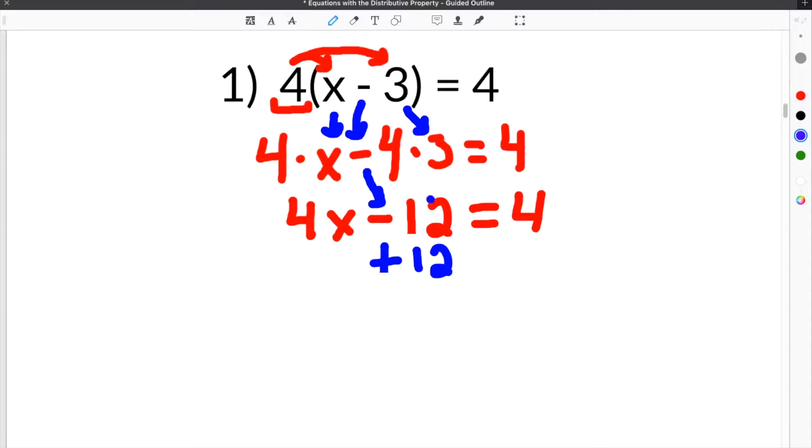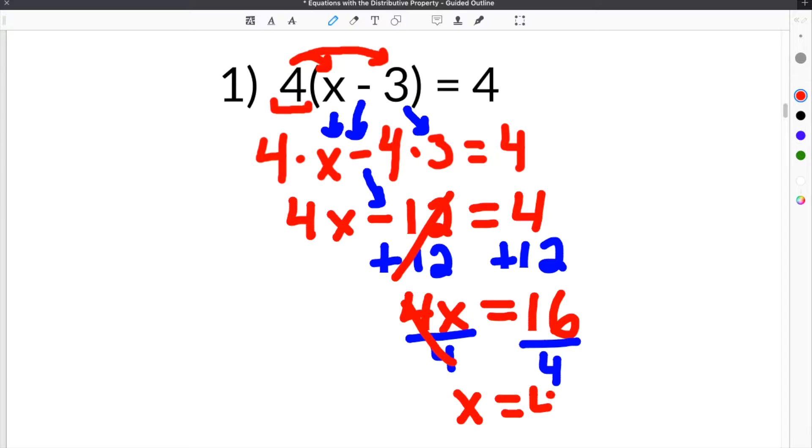We are left with 4x minus 12 equals 4. We have to get all the constants on one side together. So we're going to add 12 here. Whatever you do to one side, you have to do to the other. So we add 12 to this side. The 12s will cancel on the left side. We're left with 4x equals 16. Then the last step is to divide both sides by 4, giving us the solution x equals 4.